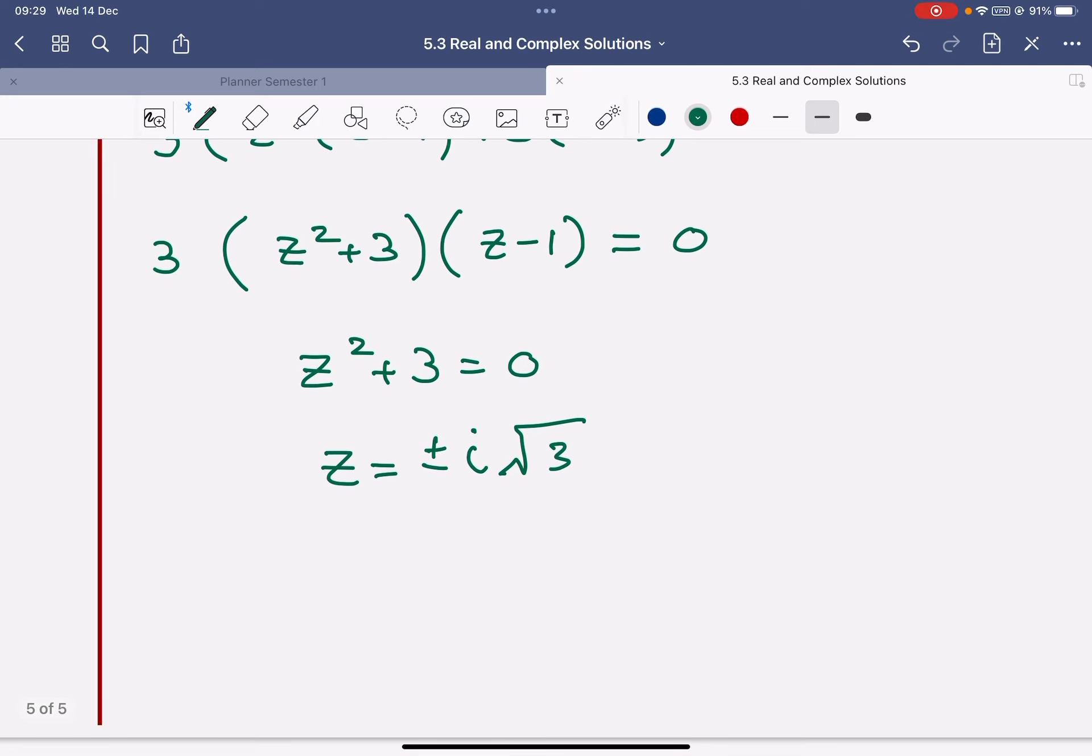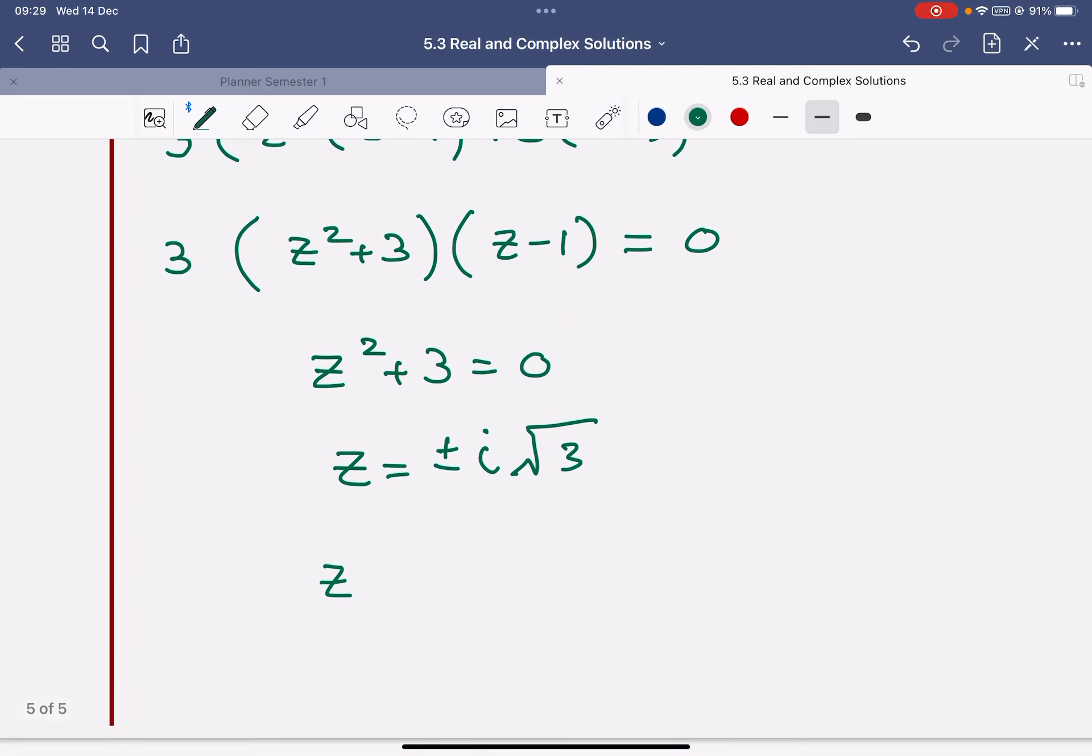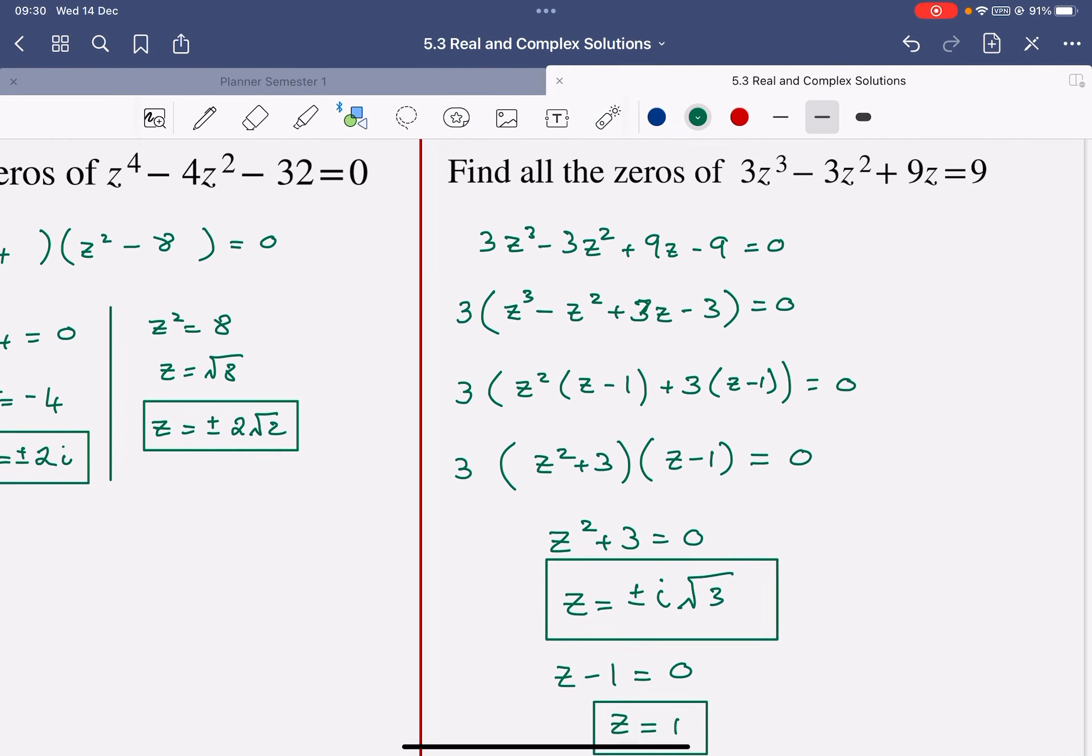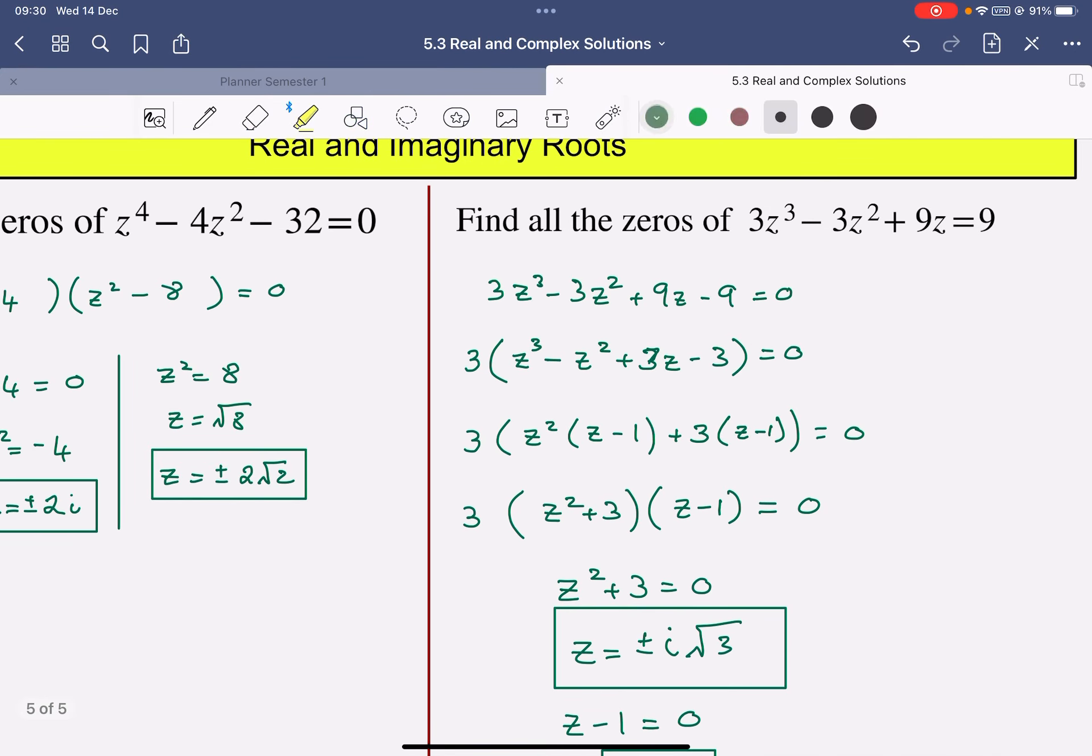And the other one, very straightforward, z minus 1 equals 0. So z equals 1. So I've got, let's just count out the roots here. I've got 1, 2 roots here. I've got another root here. That's 3 roots all together. It was a cubic at the start here. So I'm looking for 3 roots.